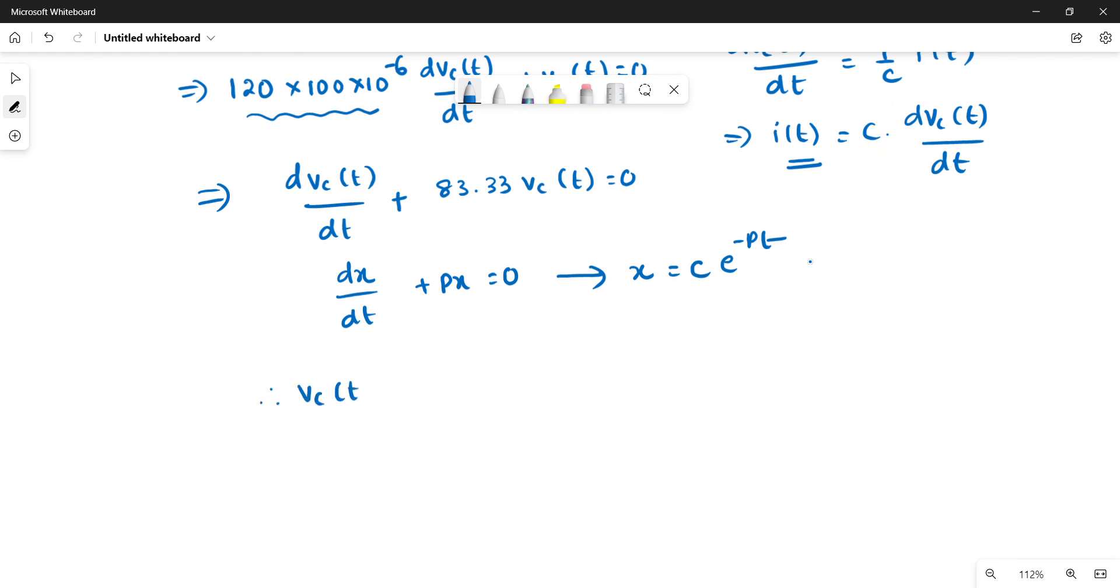Comparing this equation with dx by dt plus bx is equal to 0, the solution will be c into e power minus bt. We have already completed this derivation. So Vc of t equals c into e power minus 83.33t.